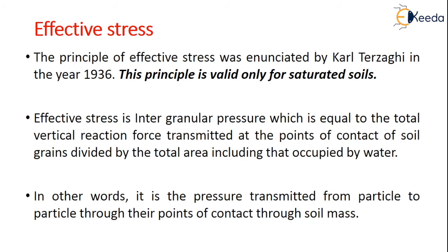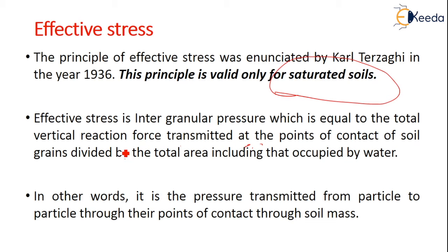What do we mean by effective stress? The principle of effective stress was first introduced by Karl Terzaghi in the year 1936, and it is valid for saturated soils. Effective stress is the intergranular pressure, equal to the total vertical reaction force transmitted at the points of contact of soil grains, divided by the total area including the area occupied by water. In other words, it is the pressure transmitted from particle to particle through the points of contact in the soil mass.